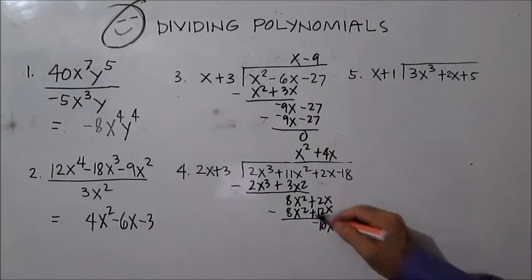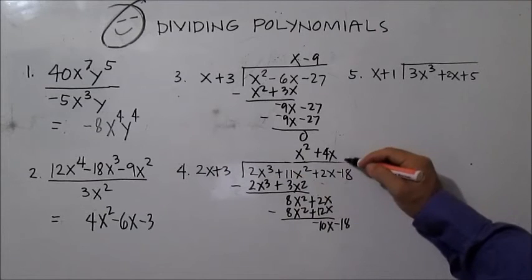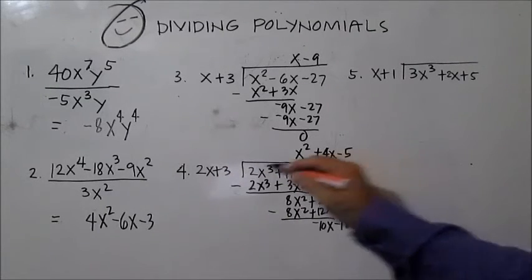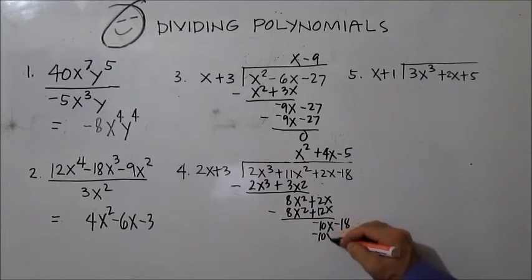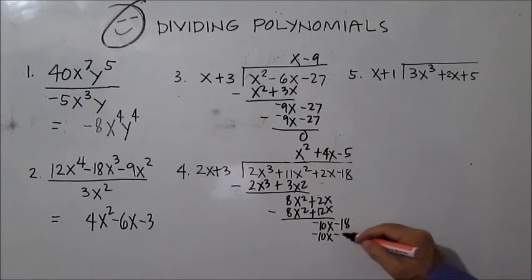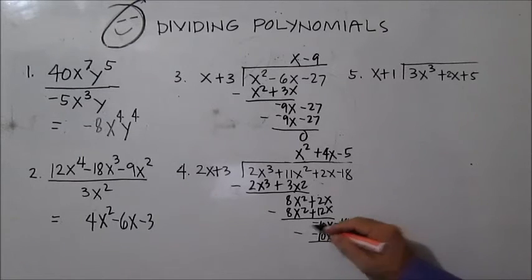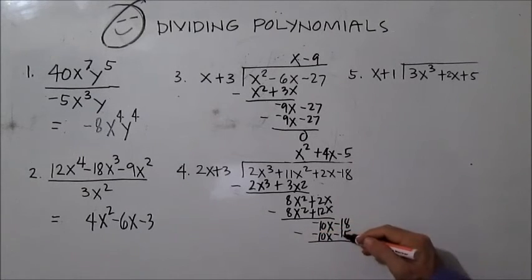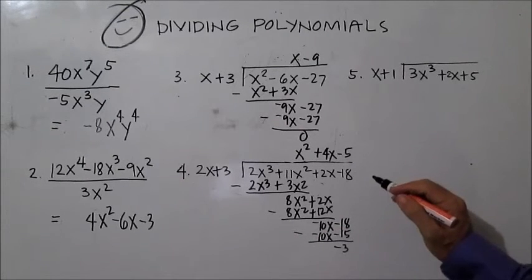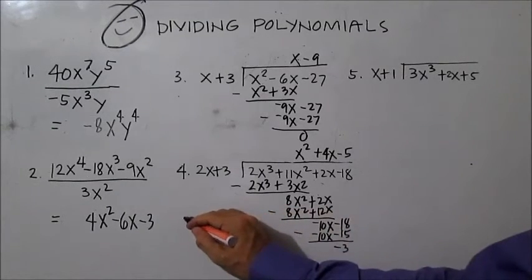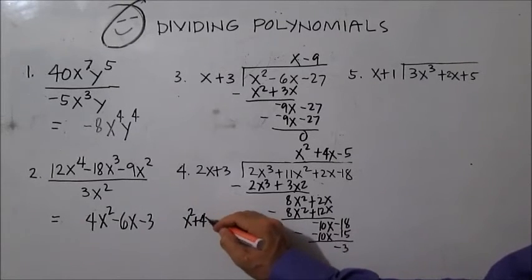Divide the first terms: negative 10x divided by 2x is negative 5. Then negative 5 times 2x is negative 10x, and negative 5 times 3 is negative 15. Subtract — this is 0. Negative 18 minus negative 15 is negative 3, so we have negative 3 as the remainder. The answer is written as x squared plus 4x minus 5, minus 3 over 2x plus 3.